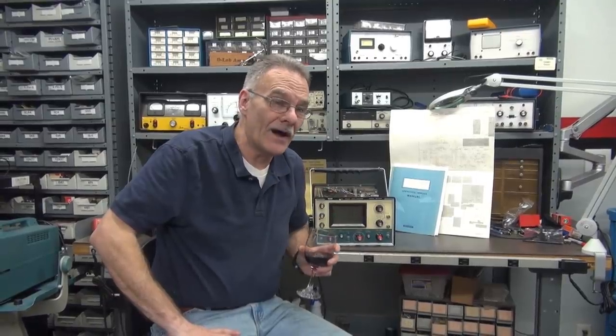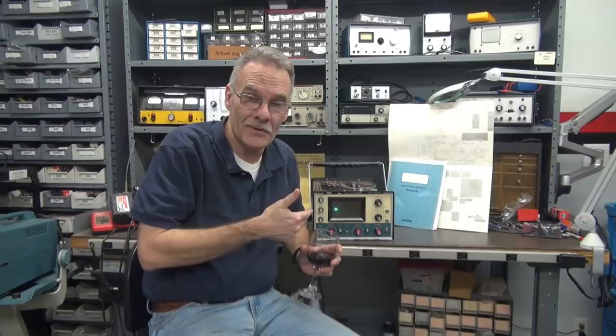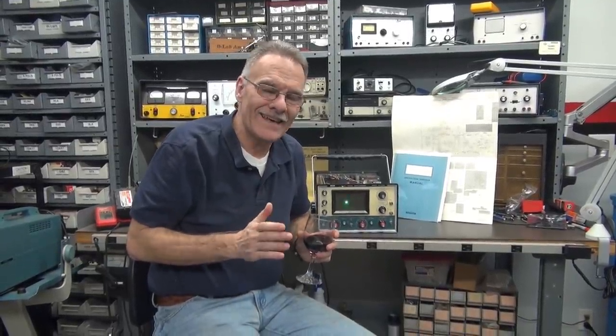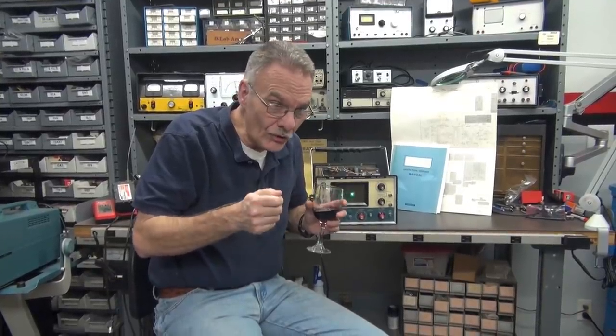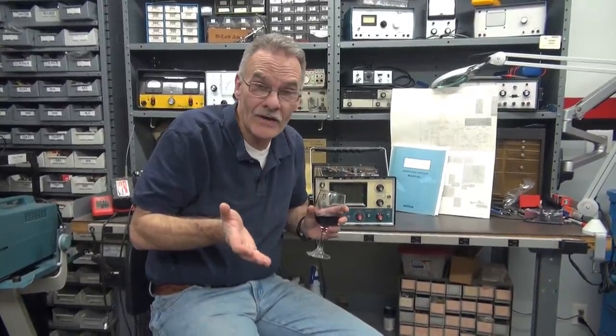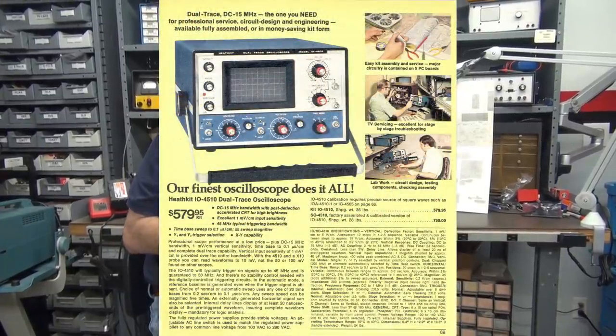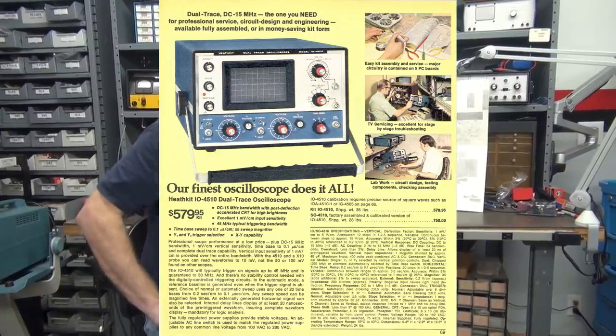You may be wondering, Terry why are you spending all this time repairing a worthless scope like that? Well okay a little history for you. When I was a kid I used to get those Heathkit catalogs and I drool over the oscilloscopes. I always wanted one but my dad couldn't afford it. Because back then in 1974 this scope sold for $750.